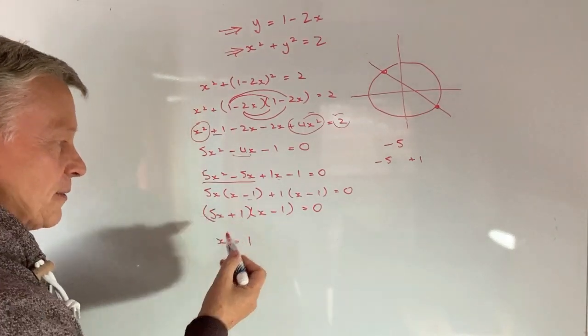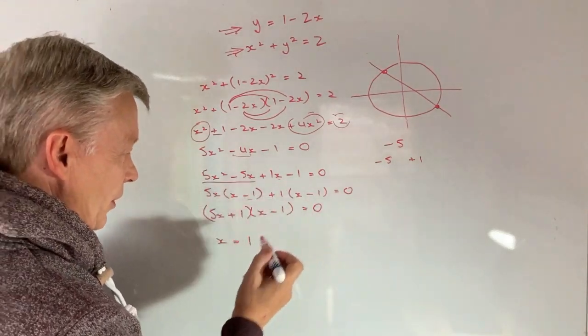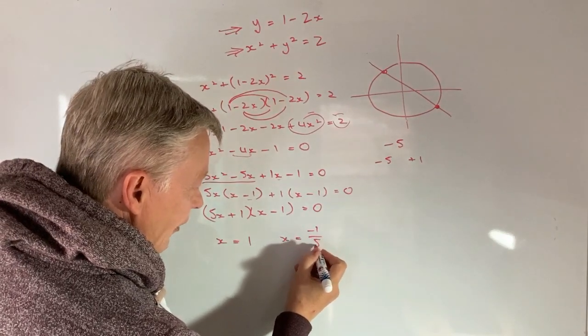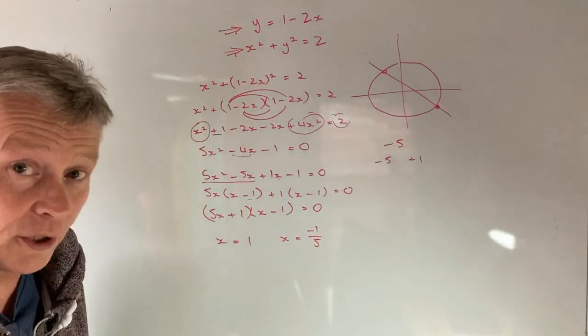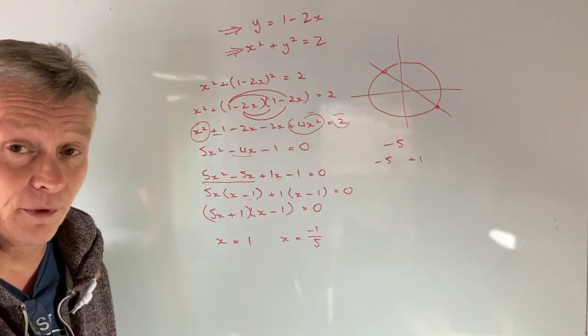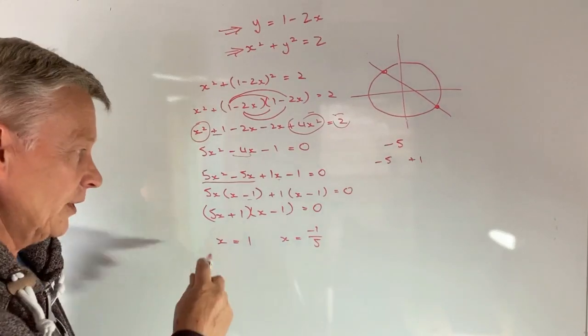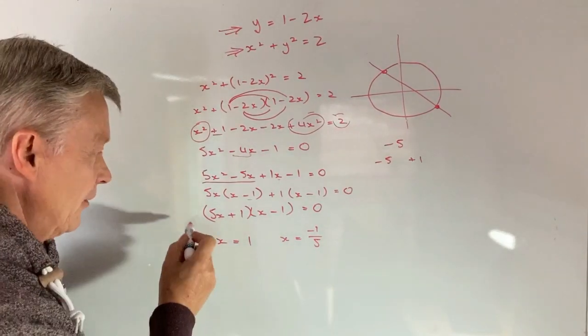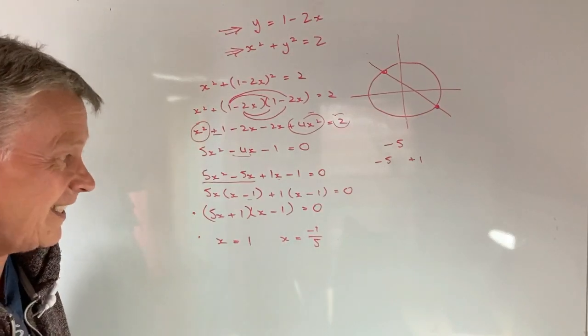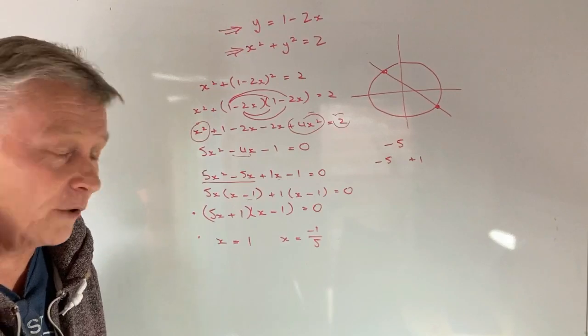Same with just getting rid of that bit. I've got 5x plus 1 equals 0. Well, if I bring this one over, I'm going to get x equals minus 1 fifth. Now if you're not sure about how to do those, definitely please have a look at some of the other videos in the playlist and on the channel and it will give you a little bit more experience with how to go from that to that. But it is very much a key area that you'll need to be able to do for these sorts of questions.